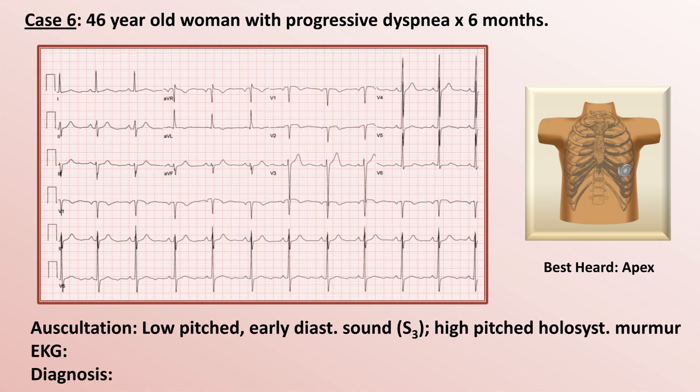Now the EKG. It shows a normal rate and normal sinus rhythm. Based on the equiphasic lead being lead 2 with a positive QRS complex in lead AVL, the axis is about negative 30 degrees. Intervals are normal. The two most important leads for P wave morphology are leads 2 and V1. In lead 2 they look normal, but in V1 the negative component just barely exceeds one small box in area, which is indicative of left atrial enlargement.